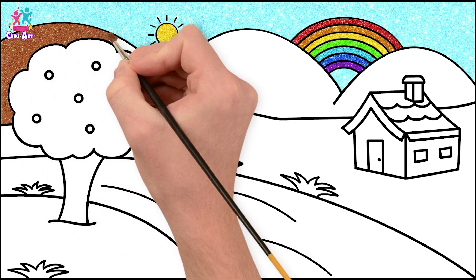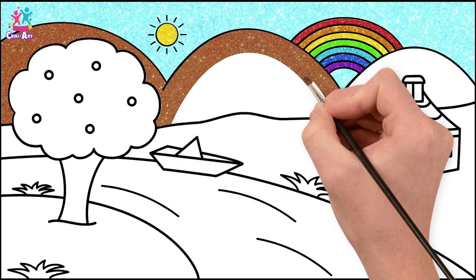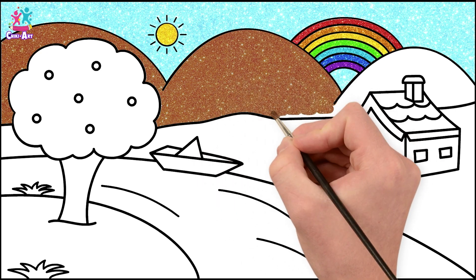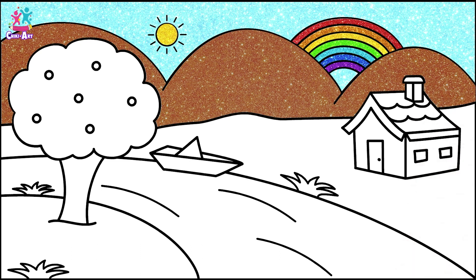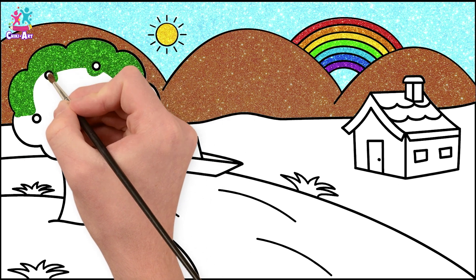Stick to a traditional rainbow if you want. We're going brown for the hills. That's it, lovely. One more to go, going around the house. Done.